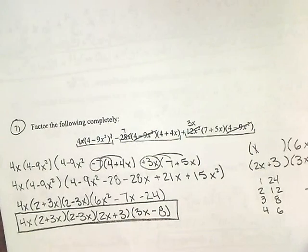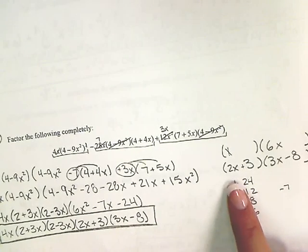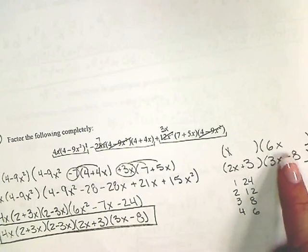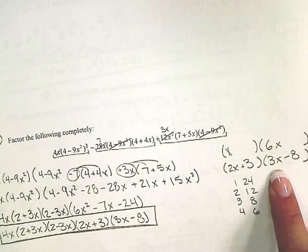And then to factor it out we had to see if it was going to be 2x times 3x, or if it was going to be x times 6x. But the 2x and the 3x worked out.